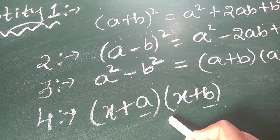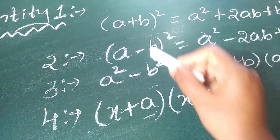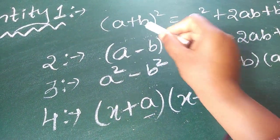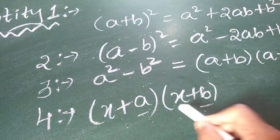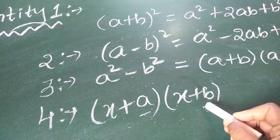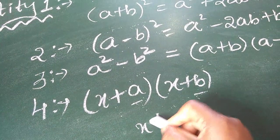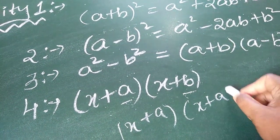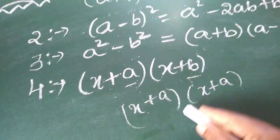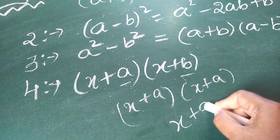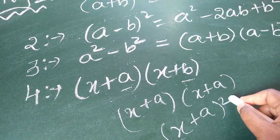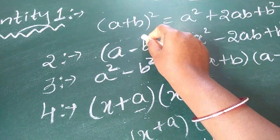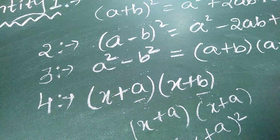Don't get confused with this formula and this formula. This formula will become equal to the first identity when a and b are both the same — that is, x plus a into x plus a. These both being the same means I can write it as x plus a whole square. Whereas here a is different and b is different. Henceforth, I can't apply the first identity for the fourth identity.